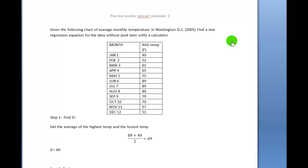I want to go over the practice anchor for the second semester pre-calc. I copied down the chart that you were given as practice data: the average monthly temperature in Fahrenheit degrees for Washington DC in 2005.